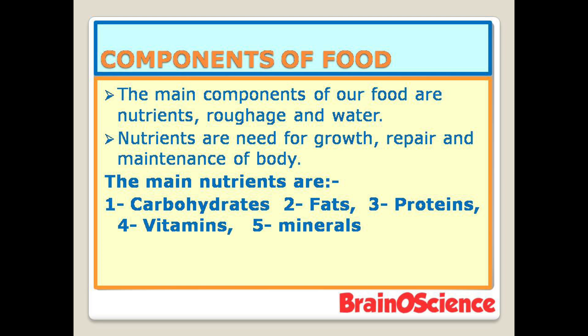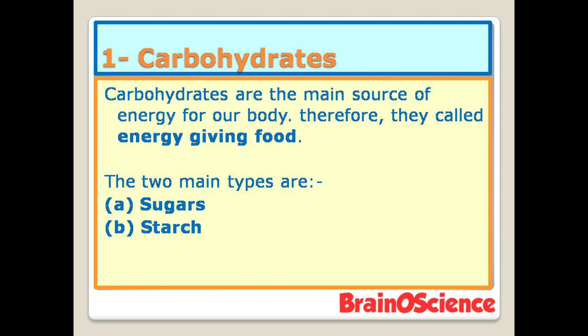The main nutrients are carbohydrates, fats, proteins, vitamins, and minerals. Number one is carbohydrates. Carbohydrates are the main source of energy for our body; therefore they are called energy-giving food. The main sources of carbohydrates are sugars and starch.